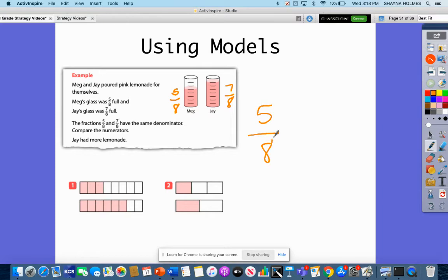So we have 5/8 and 7/8. Now remember, in the previous video, when we have the same denominator, all we have to do is look at the numerators and find which one is larger or smaller, depending on what it's asking.